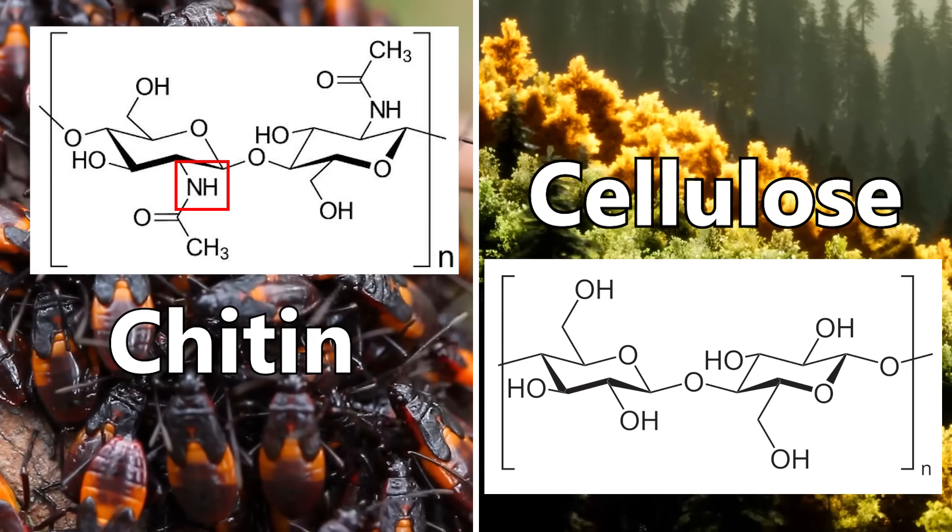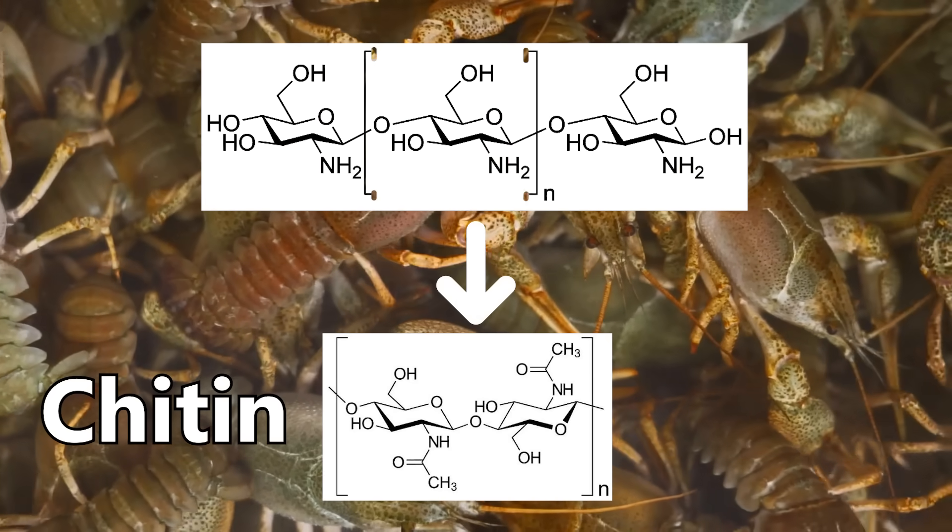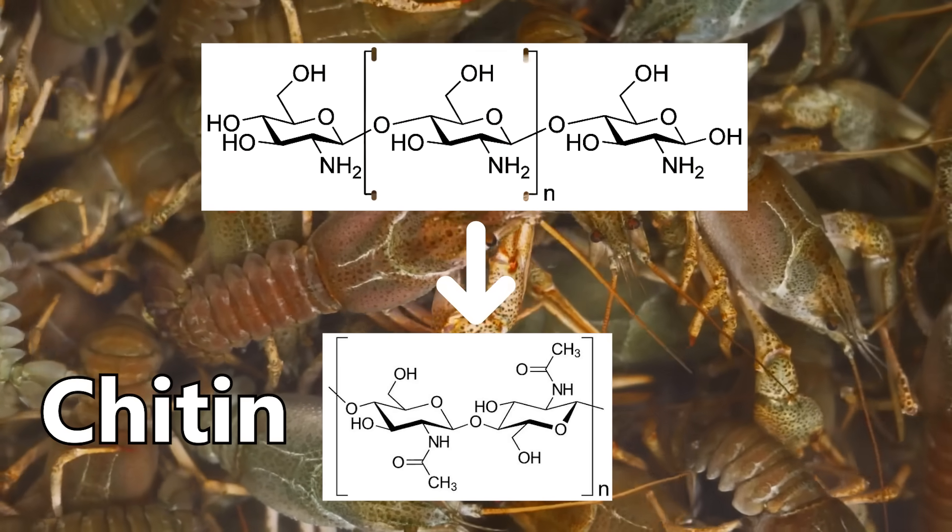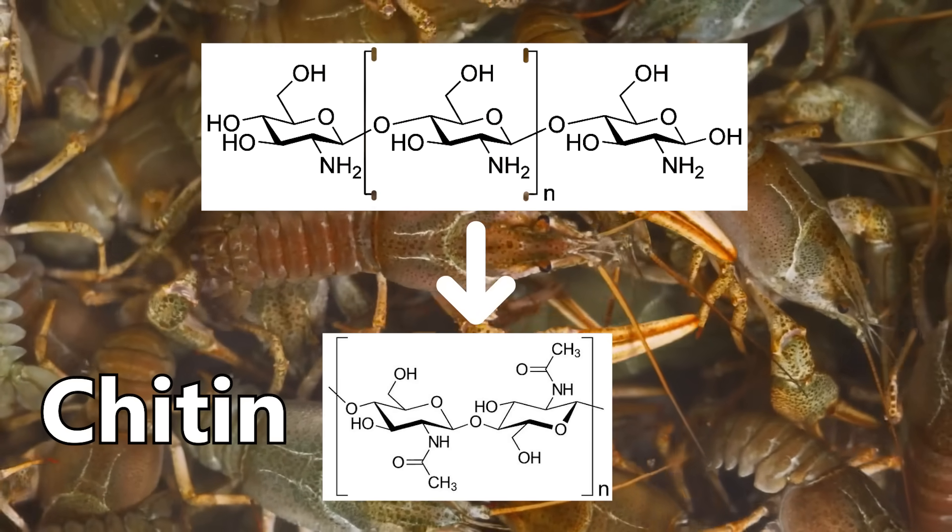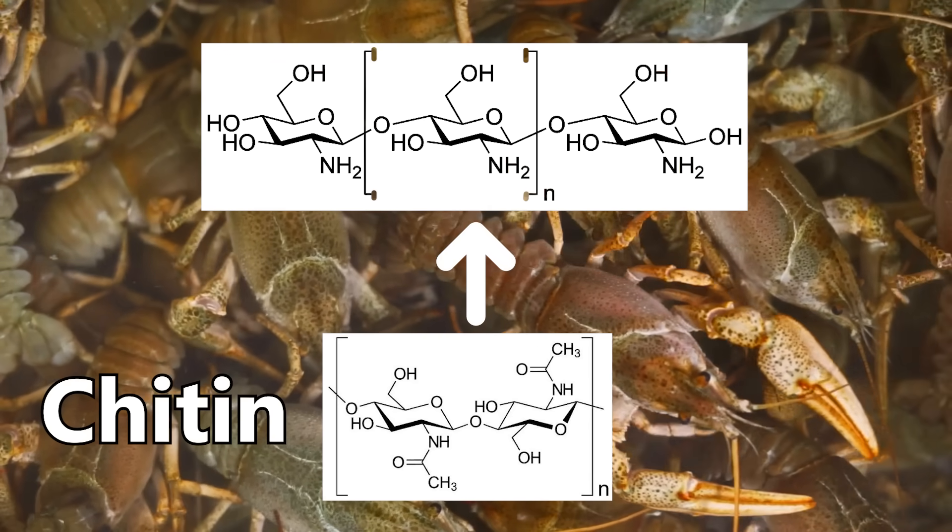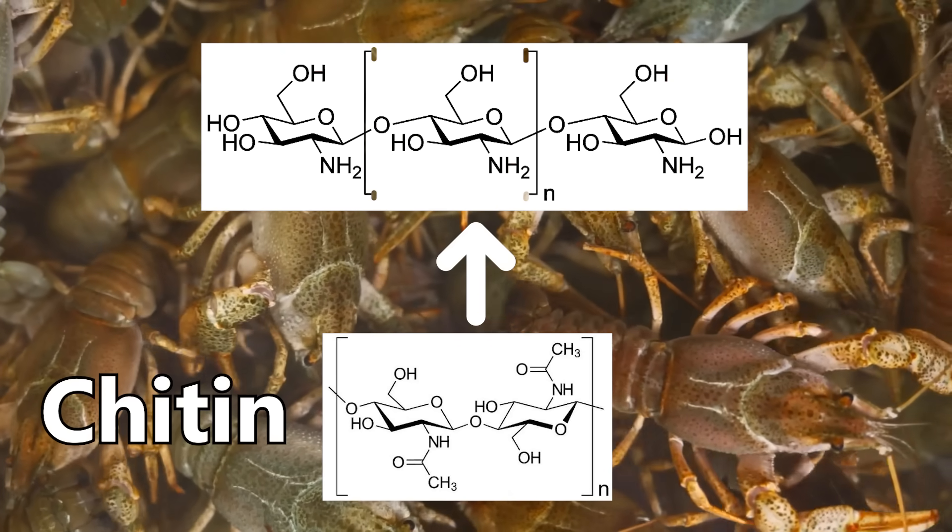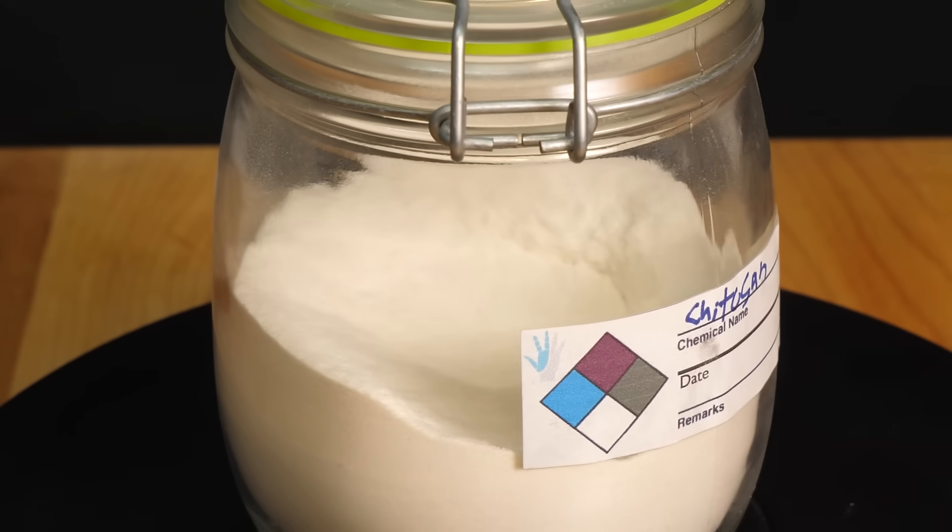That amine makes it very easy to control the solubility of the polymer. If you stick an acetyl group on it, it becomes completely insoluble in water, and that's the state you'll find chitin in most of the time. But if you pop those acetyl groups off, it becomes readily soluble in acidic solutions. This form, with very few acetyl groups, is called chitosan.